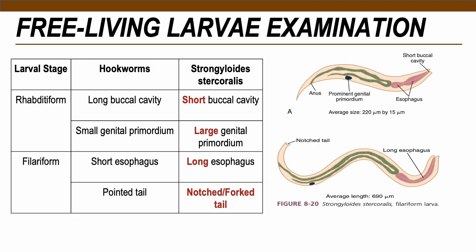Strongyloides stercoralis free-living larvae also have two morphological forms: rhabditiform and filariform. To differentiate from hookworms — Strongyloides rhabditiform has a shorter buccal cavity and a large genital primordium (the initial structure where testes and ovaries develop). The filariform larva (L3) has a longer esophagus compared to hookworms and a diagnostic notched or forked tail — a cleft or invagination between the tail.